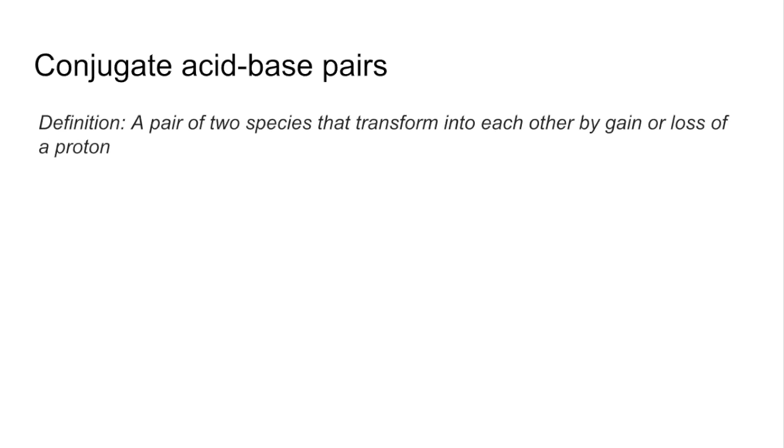Moving on to conjugate acid-base pairs now. They're defined as a pair of two species that can transform into each other by gain or loss of a proton. We'll use a couple of equations to explain this.